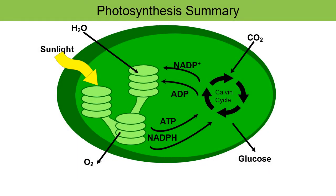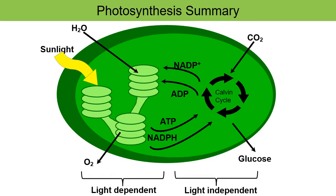Now let's get into the process of photosynthesis. You'll likely see a diagram similar to this one. We can break photosynthesis down into two separate reactions. Inside the chloroplast, the parts on the left side of the diagram are involved in the light-dependent reactions — as the name implies, sunlight is needed. On the right-hand side are the light-independent reactions, also known as the Calvin cycle.